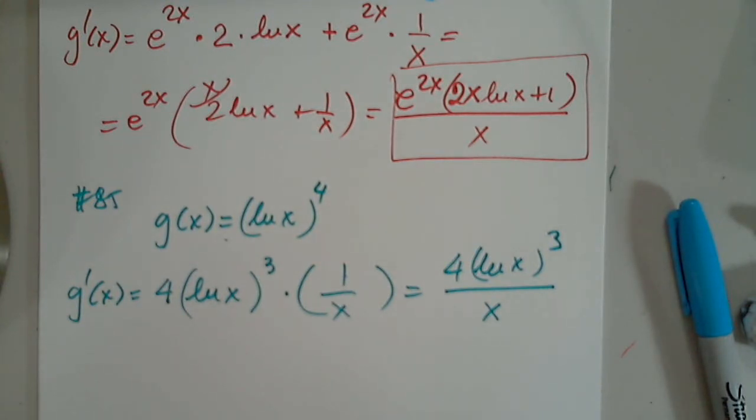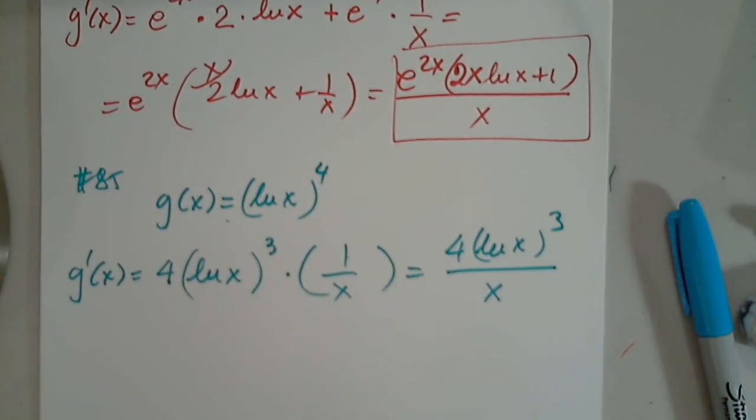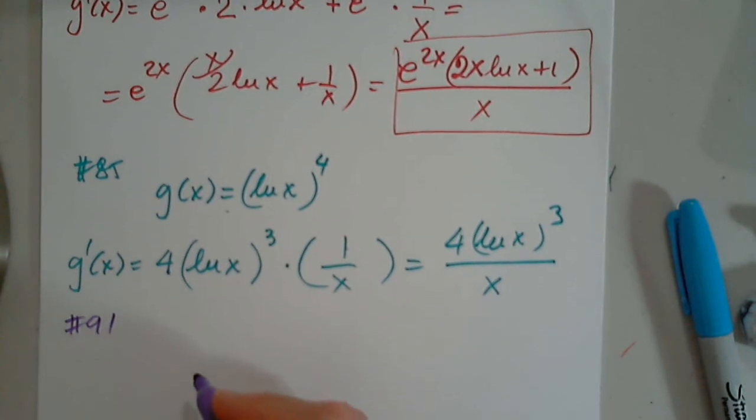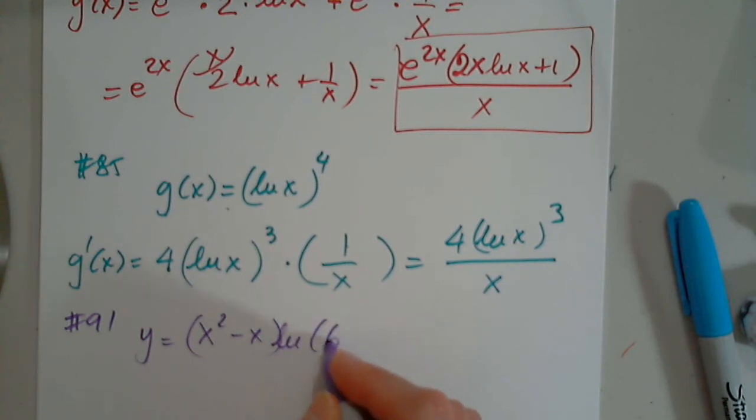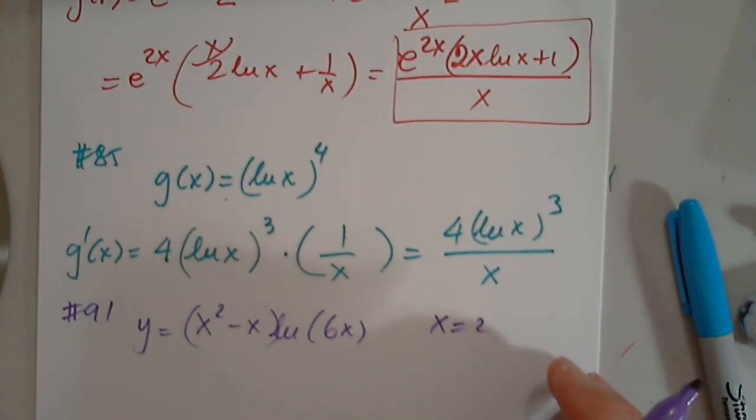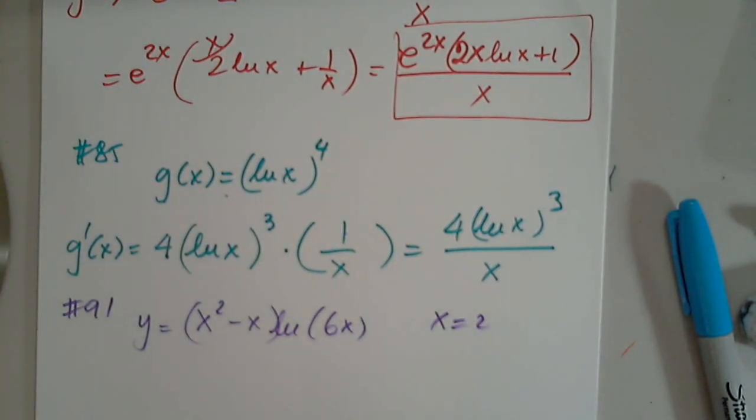That's it. Can we look at some more problems now? And we can come back to more problems if you want. Or we can do a fraction if you want, or a natural log of something like this. Or move on. Or find the equation of the tangent line. Find the equation of the tangent line. Okay. Let's look at 91. And we have y equals x squared minus x times natural log of 6x at x equals 2. Find the equation of the tangent line to the graph of this function at x equals 2. Okay. Let's see.